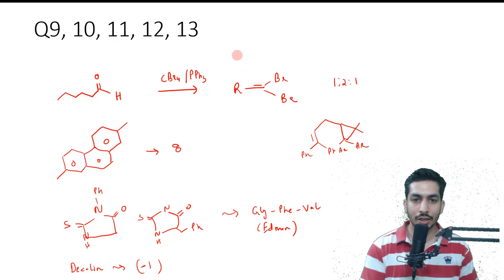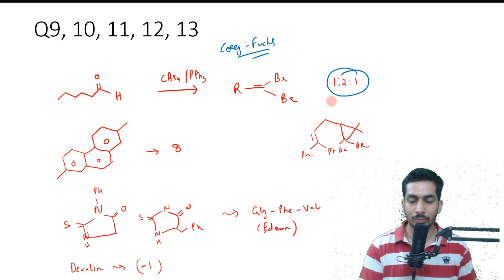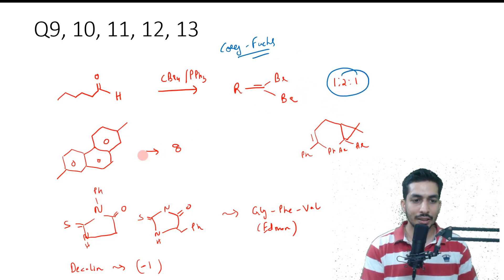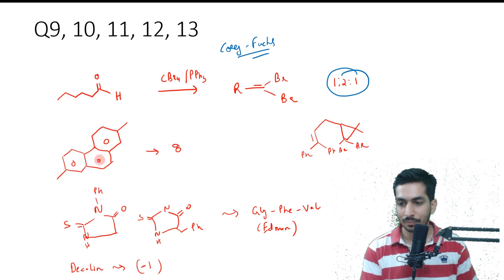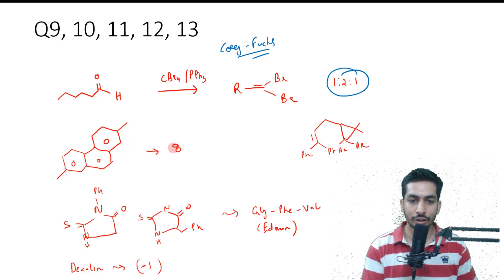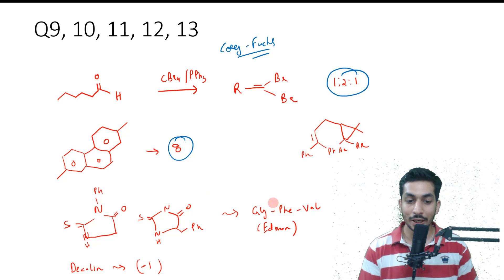The next was the Corey-Fuchs reaction — very popular and asked a lot in the CSIR exam — and it was related to mass spectrometry, with an isotope ratio of 1:2:1. There was also a question on the number of peaks in the ¹³C NMR spectrum for a specific molecule. This is a strained phenanthrene, so eight peaks will be present.